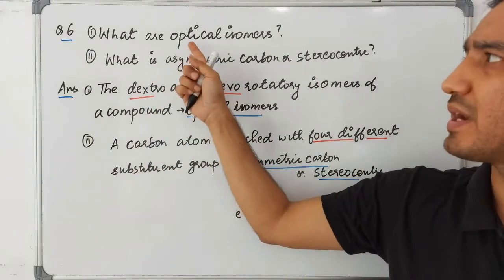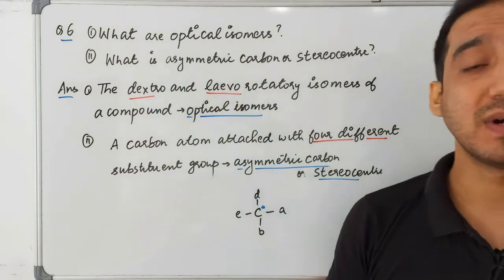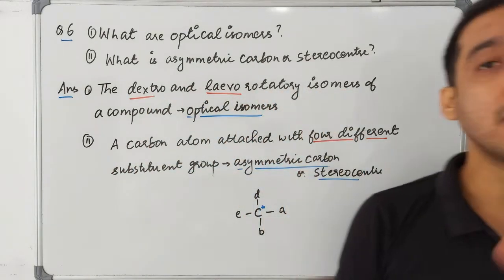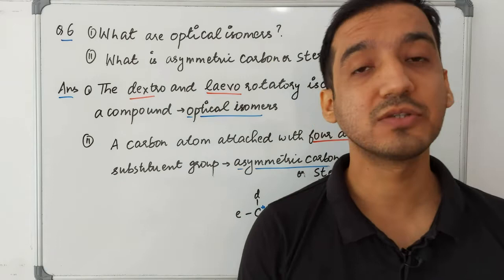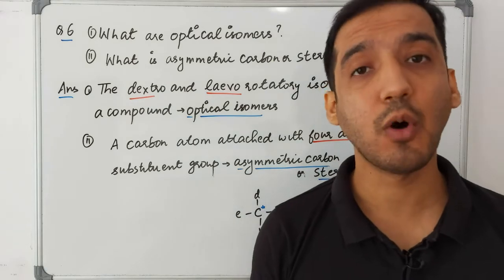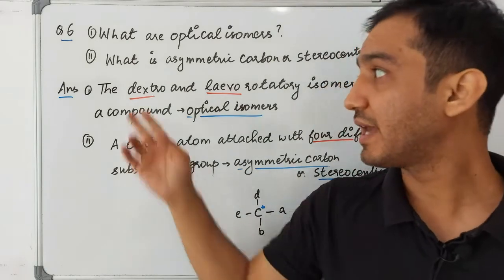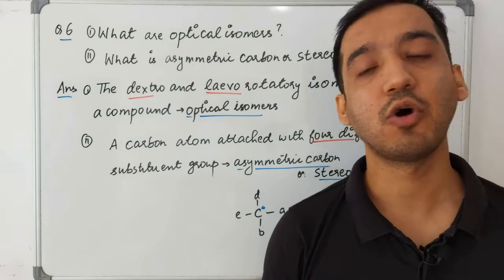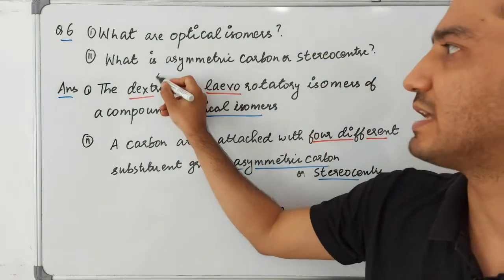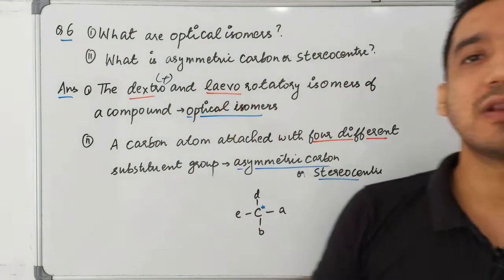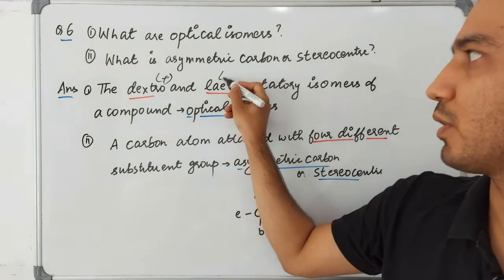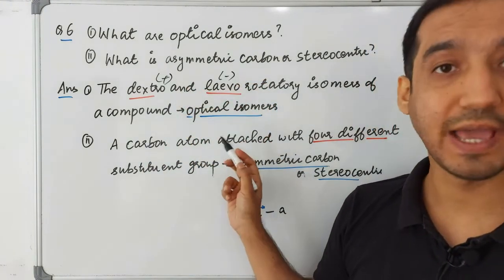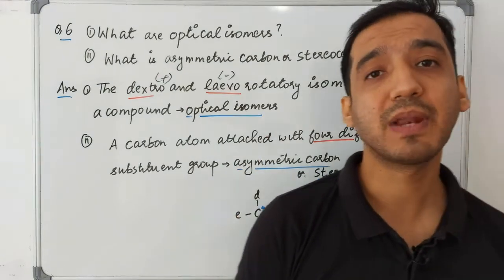Question six: what are optical isomers? Dextro and levorotatory isomers of a compound are optical isomers. One compound can exist in two forms: the dextro form, which rotates plane-polarized light to the right (indicated by +), and the levo form, which rotates it to the left. Both are optical isomers.